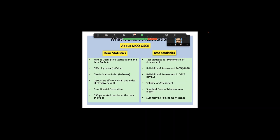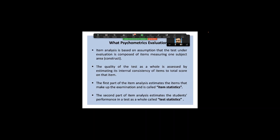Validity of assessment covers three or four important areas, and standard error of measurement is something we must look at. The psychometric evaluation is based on the assumption that the test is composed of items measuring one subject area. The quality of the test as a whole is assessed by estimating the internal consistency of items to the total score — point-biserial correlation and standard error of measurement are all done this way.